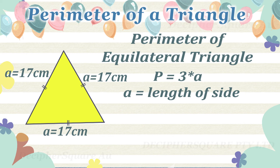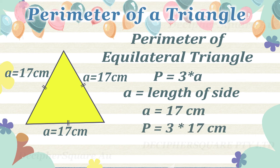In this example, the length of each side equals 17 cm. So the perimeter here is equal to three multiplied by 17 cm, that is 51 cm.